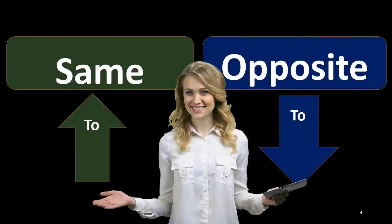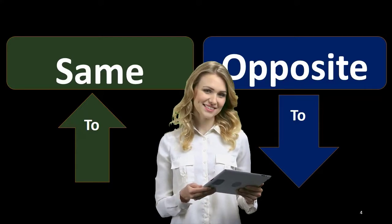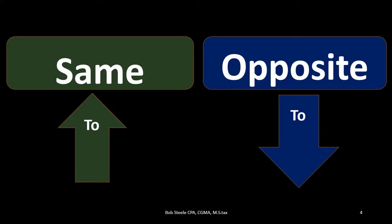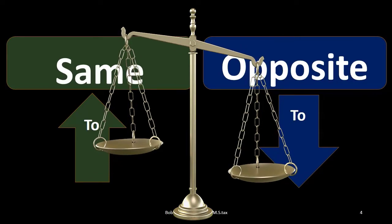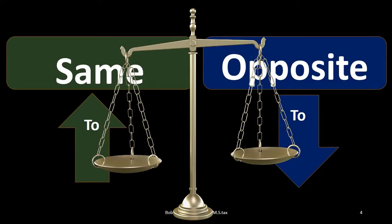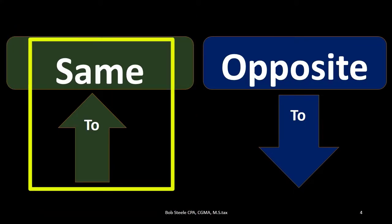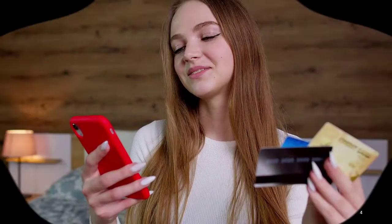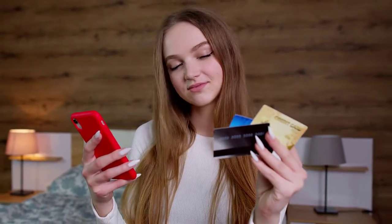In order to apply that rule, we first need to know those normal balances. For example, if we're talking about something that has a normal balance of a debit, such as assets or cash, and I want to make it go up, I apply the rule: do the same thing to it as its normal balance. Assets have a normal debit balance — a debit is the same thing as a debit — so a debit will make assets go up.